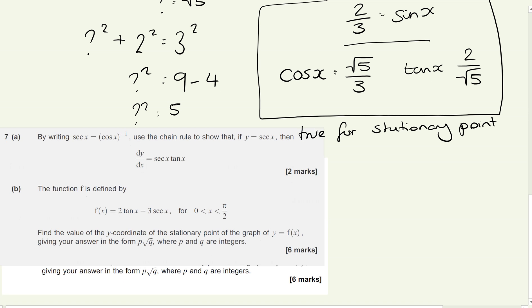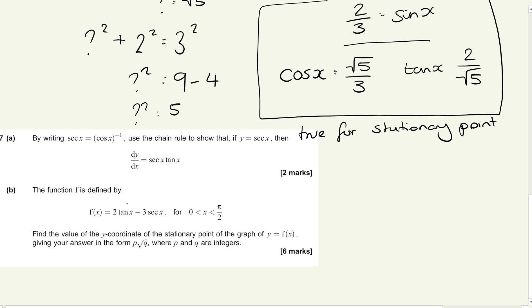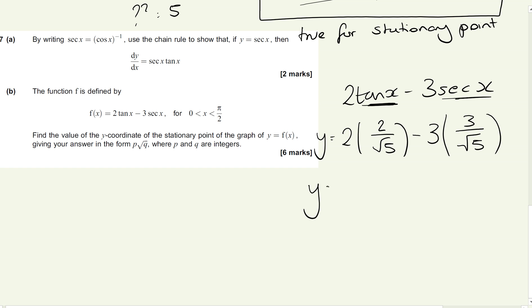So we are trying to find the y value for 2 tan x minus 3 sec x. So 2 tan x is 2 lots of 2 over root 5. And 3 sec x, minus 3 sec x, well, sec is 1 over cos. So we're going to take that to the power of minus 1, effectively. So it's 3 lots of 3 over root 5. We've flipped over cos x. And in doing that, that's going to give us the y value. So this is what tan x is equal to at the stationary point. That's what we had up there. Sec x is the reciprocal of that one. So just to finish this question off then,